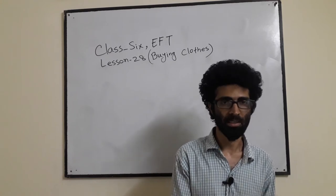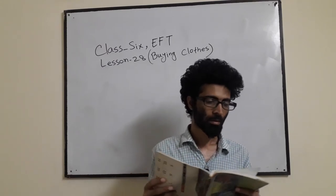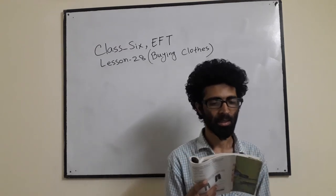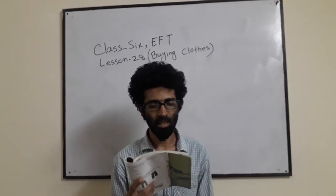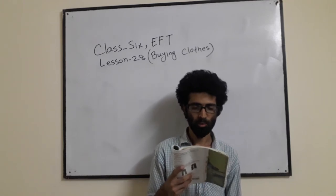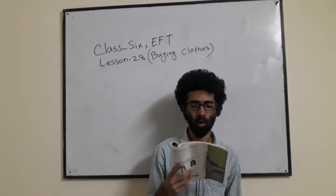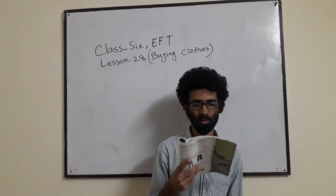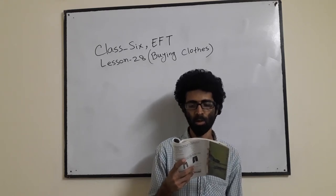Go to page 86. Exercise C — Mrs. Urmila Karim is going to buy some clothes for her son Imran. They are now at a clothes shop. Read the conversation between Imran and the shop assistant. Imran: 'Excuse me, where are the polo shirts?' Assistant: 'They are over there in the boys' section. Let me show you.'